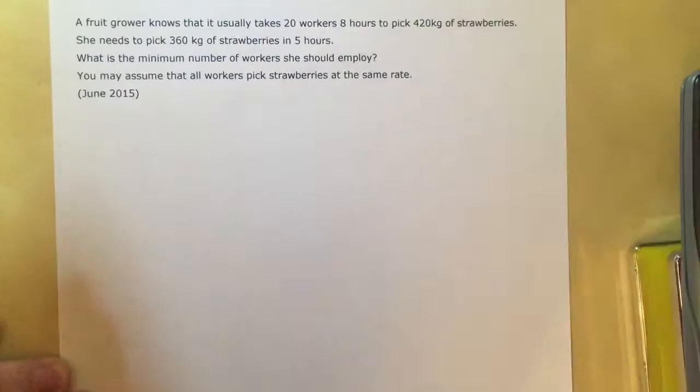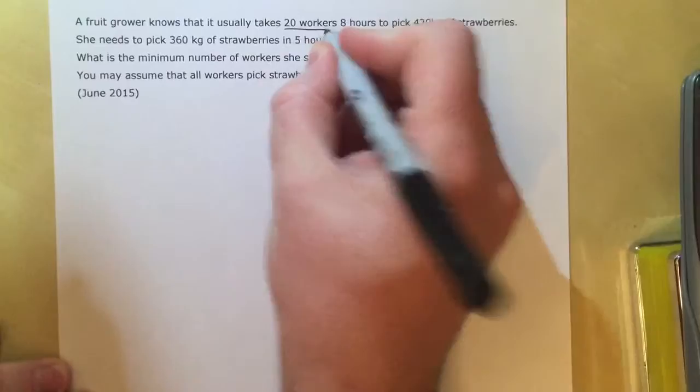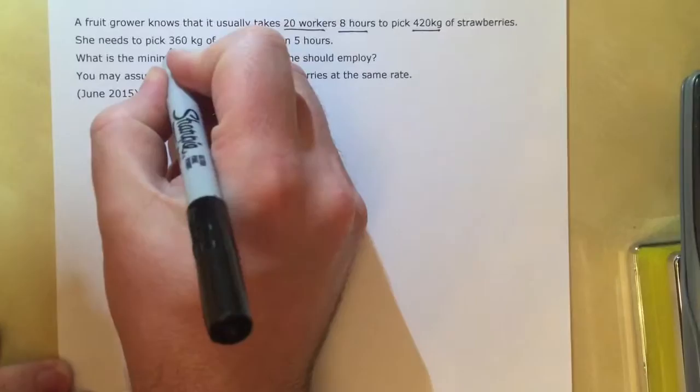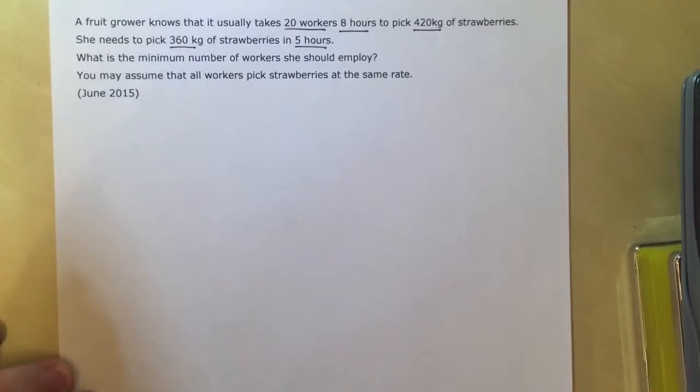This is a proportion question involving three variables: workers, hours, and strawberries. A fruit grower knows that it usually takes 20 workers 8 hours to pick 420 kilograms of strawberries. She needs to pick 360 kilograms of strawberries in 5 hours. The question is asking what is the minimum number of workers she should employ.